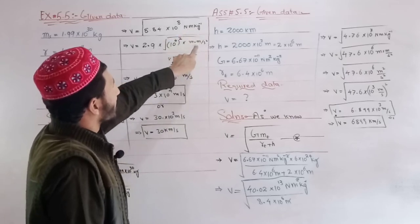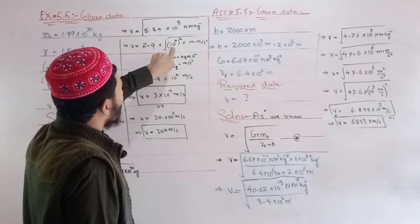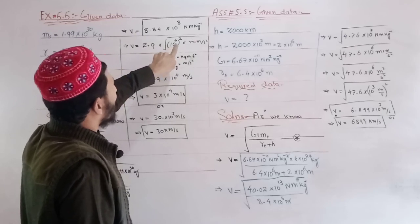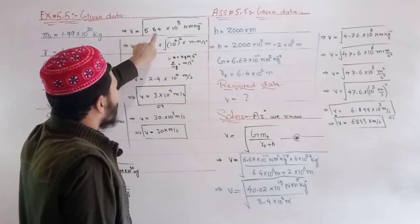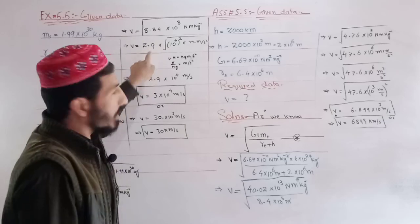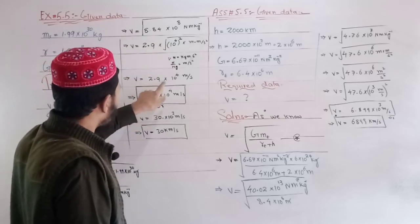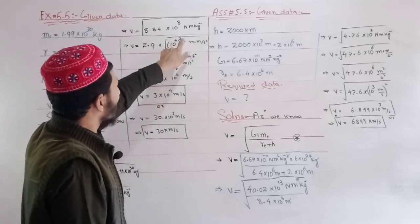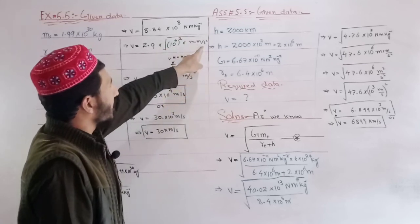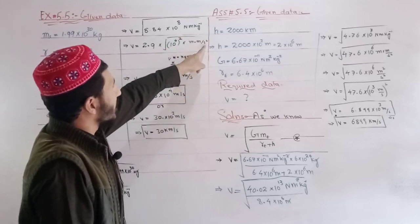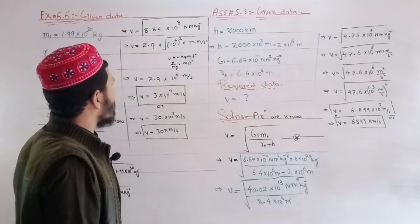Taking the square root of 8.84 × 10^8, we get approximately 2.9 × 10^4 meters per second.